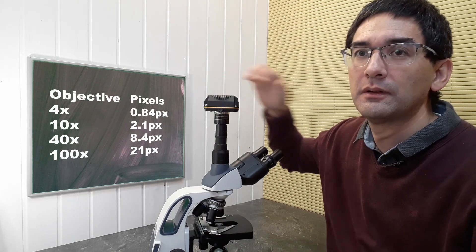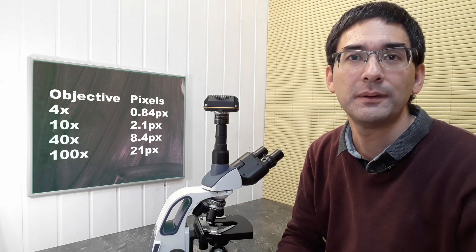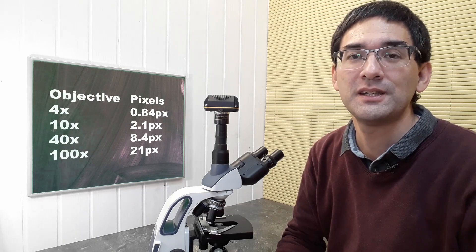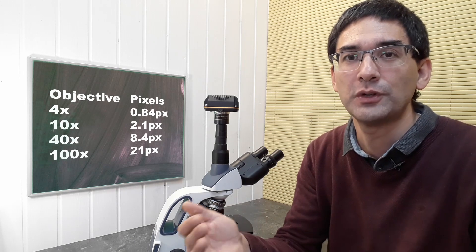With a 40 times objective, I'm getting 8.4 pixels on the camera. Now we can proceed to step number three, where on the monitor we convert those pixels back into millimeters to have a real life measure for the final magnification calculation.